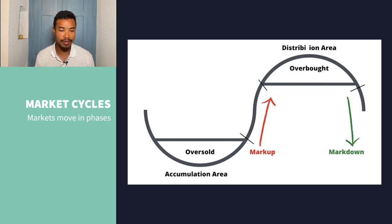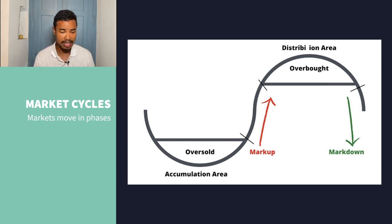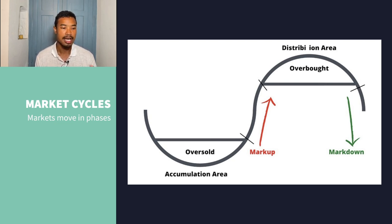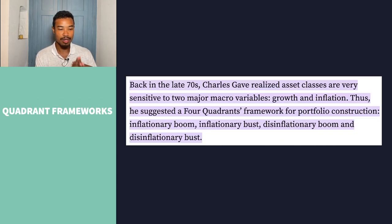As we know, markets move into phases. This is a commonly discussed theory called the Wyckoff theory of distribution — four different phases: accumulation, mark up, mark down, and the distribution areas. This is one most people are familiar with, and I wanted to use it to ground our discussion. But the theory we're going to speak about today is a different one — it's called the Four Quadrants Framework.